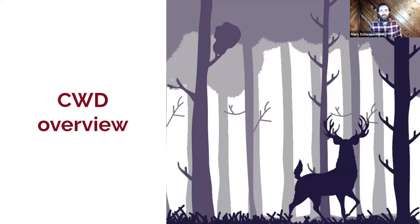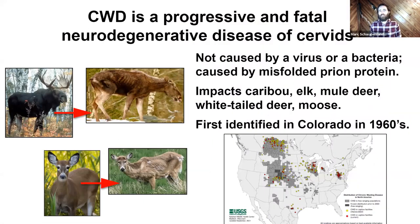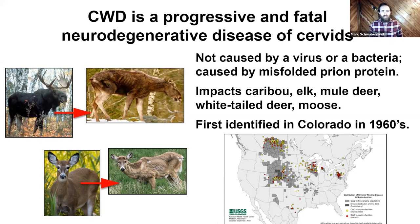Jumping right into chronic wasting disease overview: it is a progressive and fatal neurodegenerative disease of cervids. Very important is that it's not caused by a virus or a bacteria, which makes it pretty unique in the disease world. It's caused by a misfolded prion protein. It impacts members of the cervid family like caribou, deer, elk, and moose. We see a healthy-looking bull moose on the left and a sickly bull moose on the right. Many animals that test positive look completely healthy — we'll talk about that more.